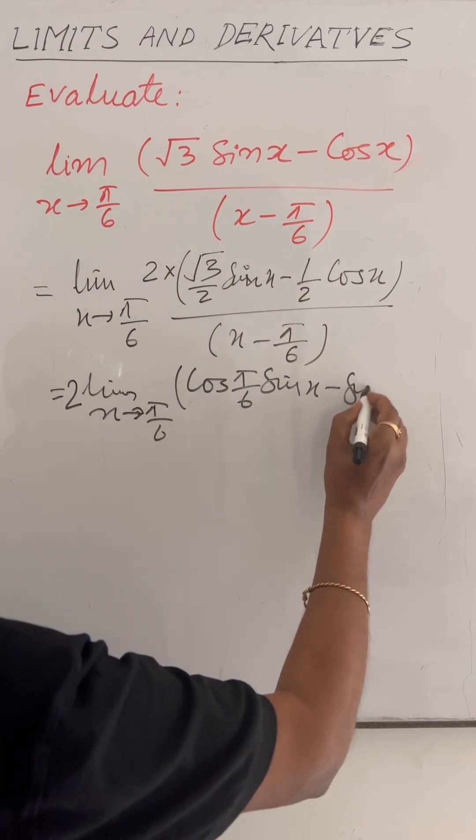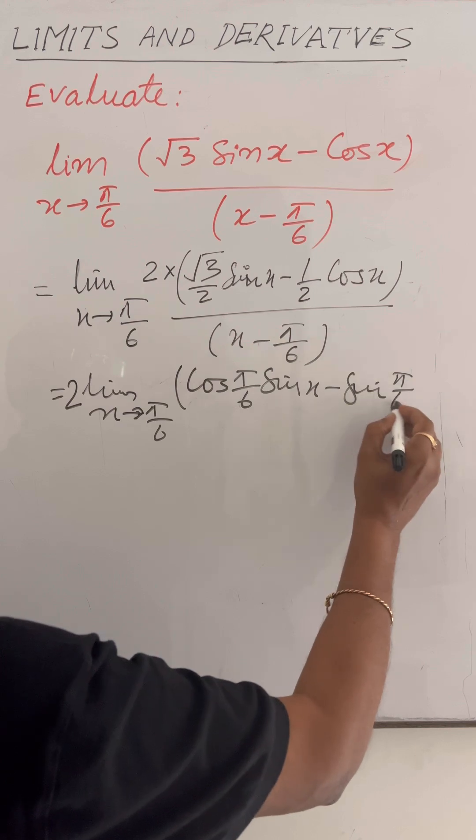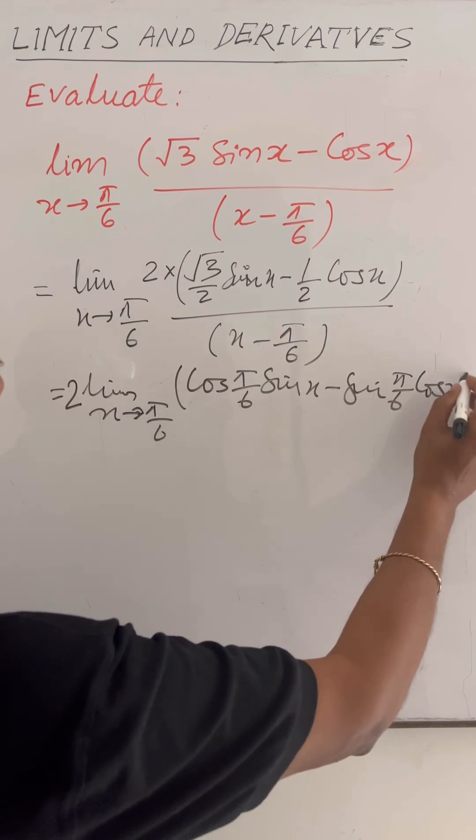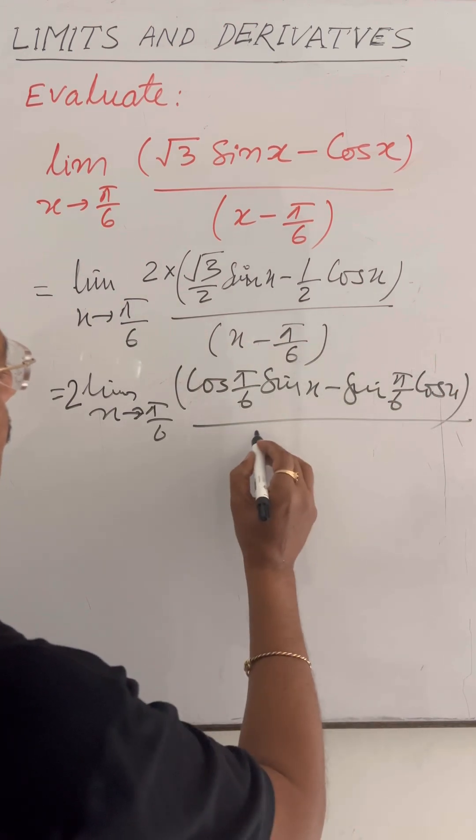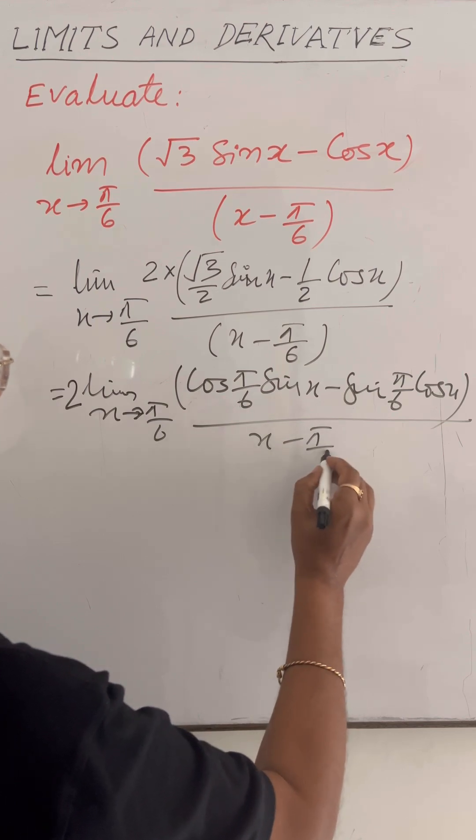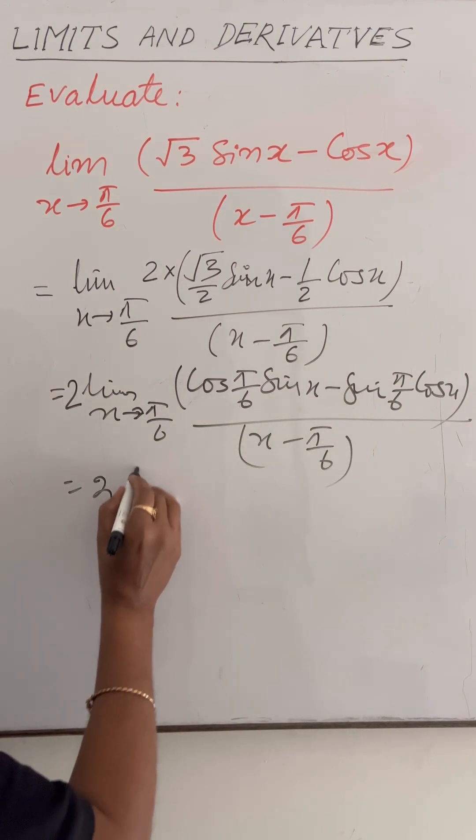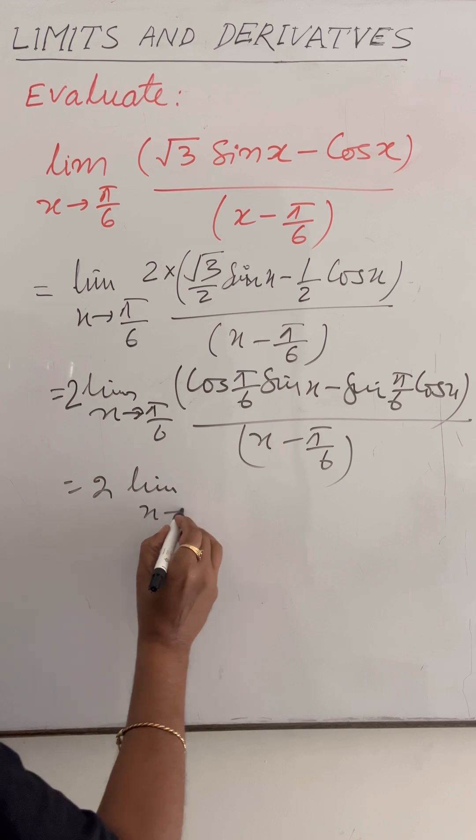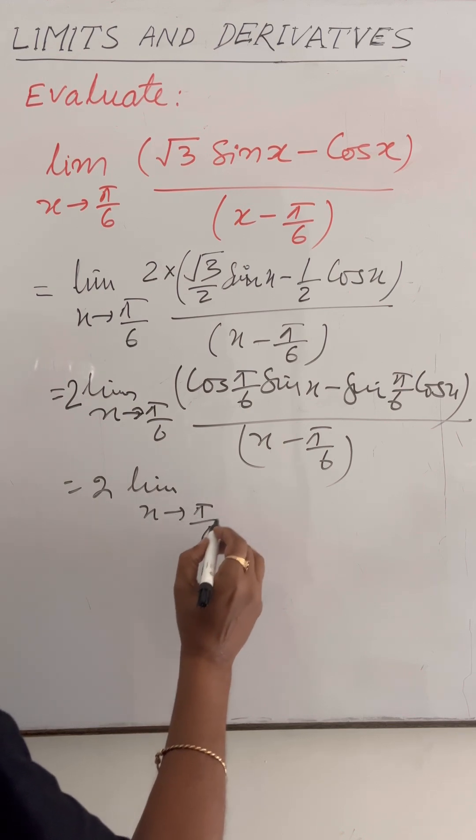Half is sin π by 6, sin π by 6 into cos x upon x minus π by 6. This is equal to 2 limit x tends to π by 6.